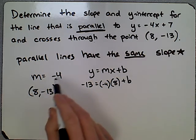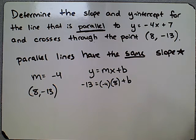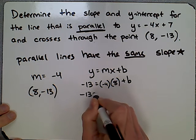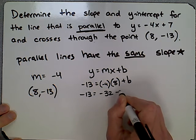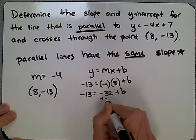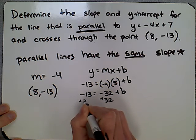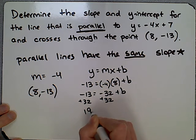We're going to need that b value and the m value to write the new equation. Here we get -13 equals... Multiply those together, you get -32 plus b. We add that 32 to both sides and get positive 19 equals b.